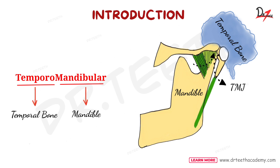If we talk about its type, it is a condylar variety of synovial joint. To understand this condylar variety, see this diagram of the mandible. Here we have the condylar process — this process is fitted into the temporal bone, making the TMJ. We say that this joint is of condylar variety because the condyle articulates here.